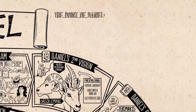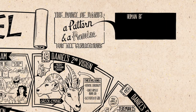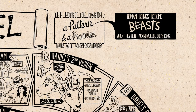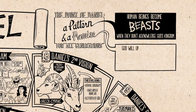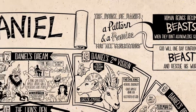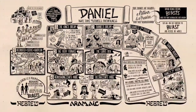The point of Daniel is that all generations of readers can find here a pattern and a promise. It's a pattern that human beings and their kingdoms become violent beasts when they glorify their own power, redefine right and wrong, and don't acknowledge God as their true king. But Daniel also holds out a promise that one day God will confront the beast, rescue his world and his people, and bring his kingdom over all nations. And so for every generation, this book speaks a message of hope that should motivate faithfulness. And that's what the book of Daniel is all about.